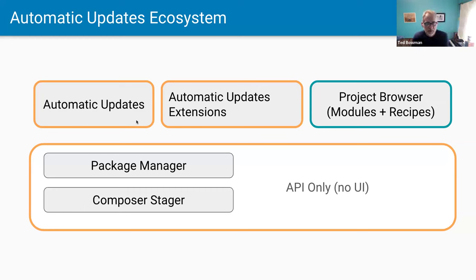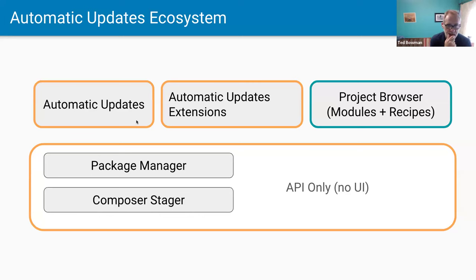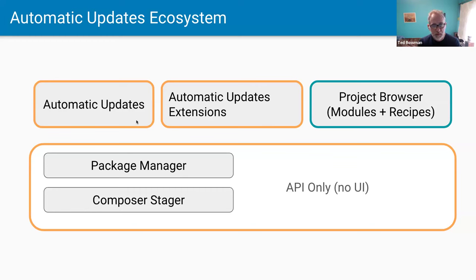Let's talk about the ecosystem. On the bottom we have two API-only modules: Composer Stager and Package Manager. On top of that we have Automatic Updates — which updates core — Automatic Updates Extensions for modules and themes, and Project Browser, which installs modules and recipes. In the future, basically anything helpful from a Composer perspective could be added as additional modules on top of that.